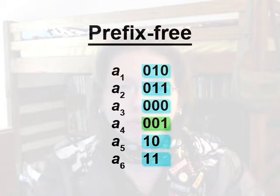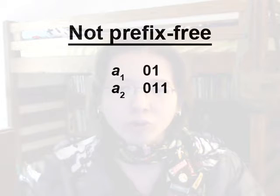And this is necessary in order to decode the message correctly. For example, say we had only two symbols, symbol 1 and symbol 2. And their codewords were 01 and 011, respectively.